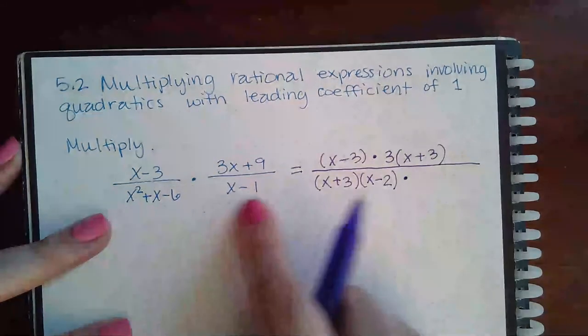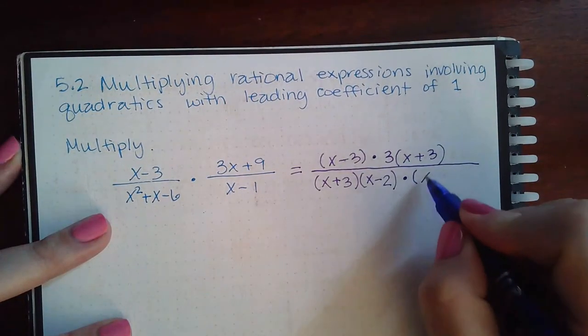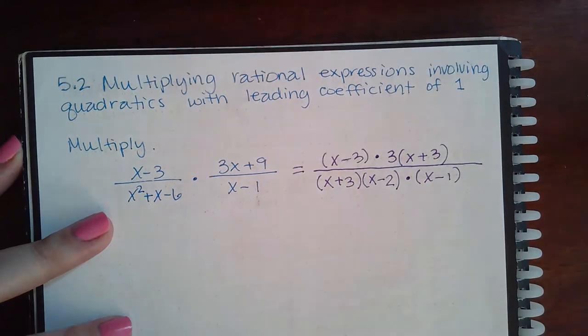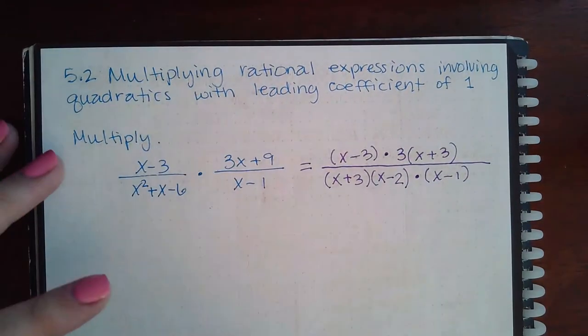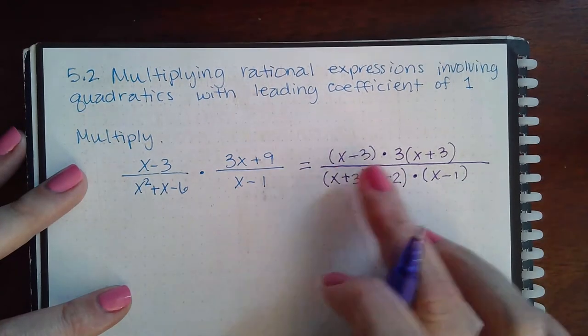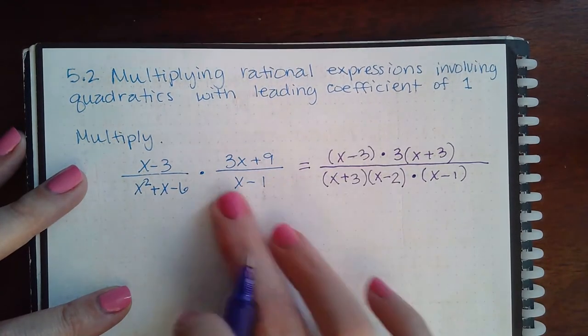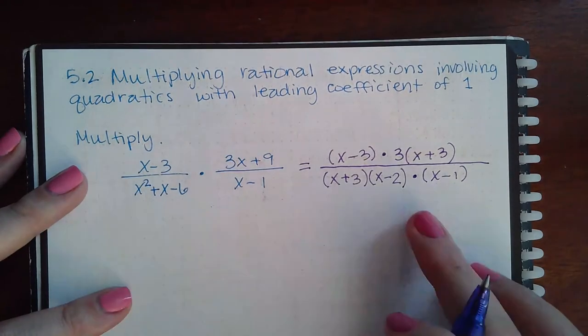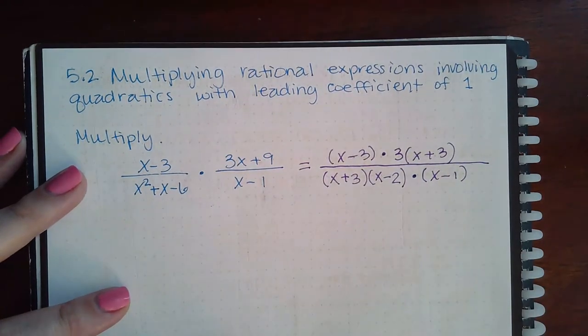And then times this denominator, which I cannot factor, so I'm going to just put it in parentheses because it's going to be multiplied. That entire numerator has to get multiplied, which is why I put the parentheses. This entire denominator needs to be multiplied by that one, which is why I put it in parentheses.